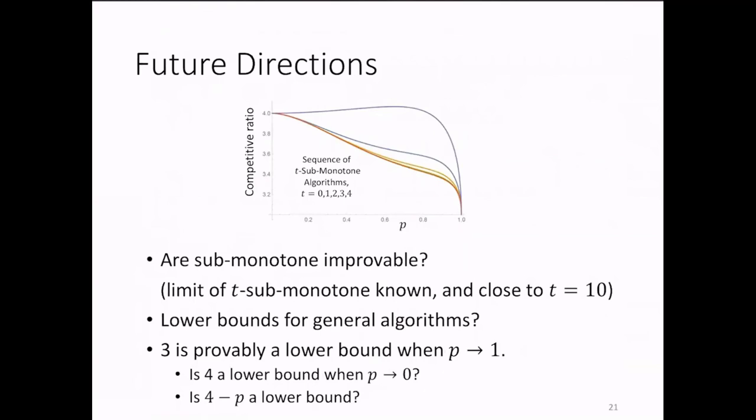Note that we did not prove any lower bound for our sub-monotone algorithms. Are they improvable? My conjecture is yes. Can we prove general lower bounds for any algorithm? This question seems very challenging, and maybe a few easier lower bound questions are the following.